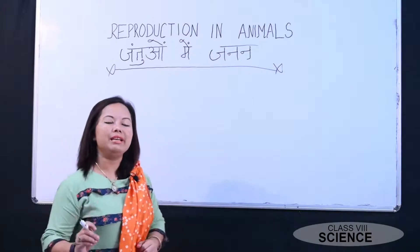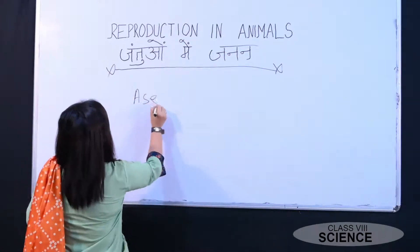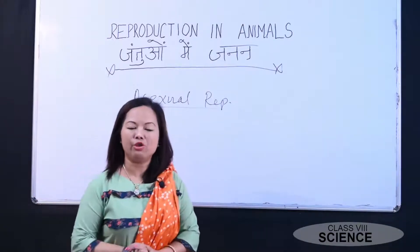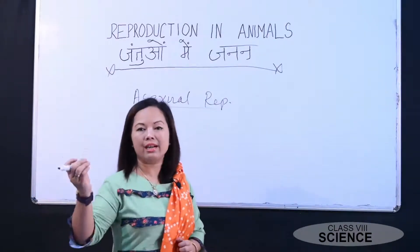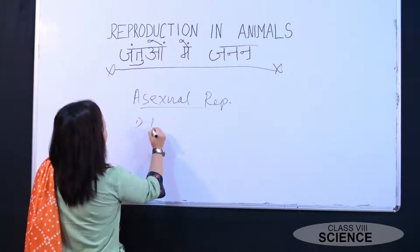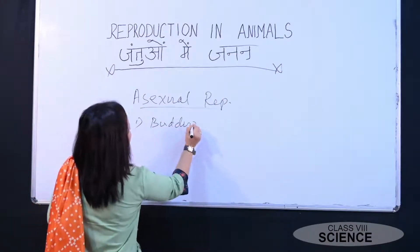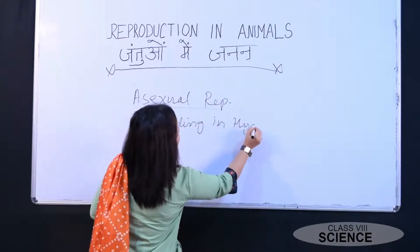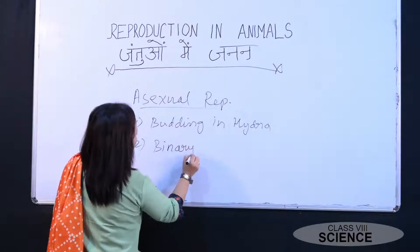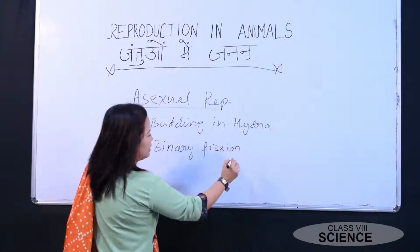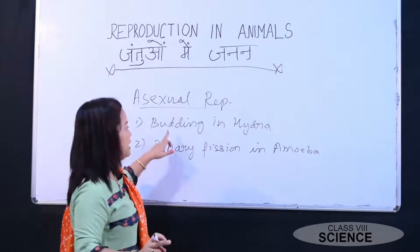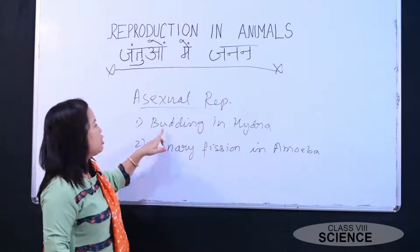Now finally we will talk about asexual reproduction. There are several methods of asexual reproduction — in this class you will be studying two types: number one is budding in hydra, and number two is binary fission in amoeba.